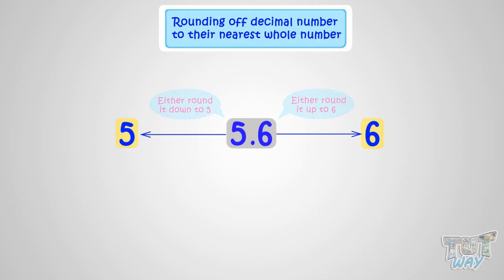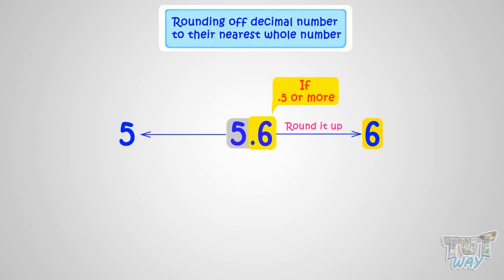And the rule is: if the decimal portion is 0.5 or more than 0.5 — that is, if the decimal number is more than a half — we round it up. And it means the number is more close to the next whole number. And if the decimal portion is less than 0.5, we round it down, as it means the decimal portion is less than a half, or more close to the previous whole number.